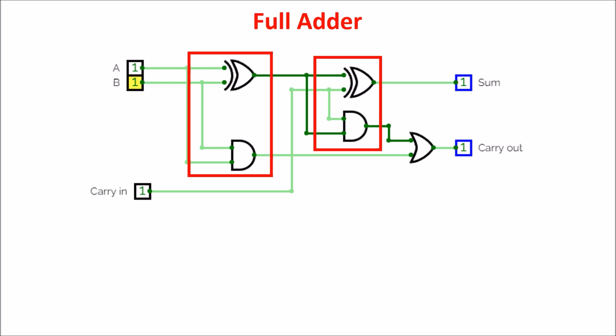So for example, adding 1 plus 1 with 1 as carry in produces 0 on the output of the first XOR, and a 1 on the output of the second XOR, because the carry in is at 1. The two 1s in the input data produce a 1 on the output of the first AND gate, so the final carry out is at 1.